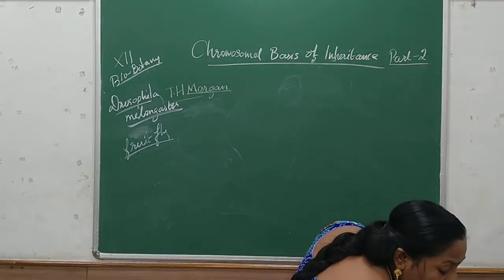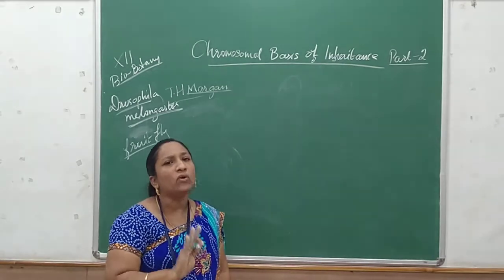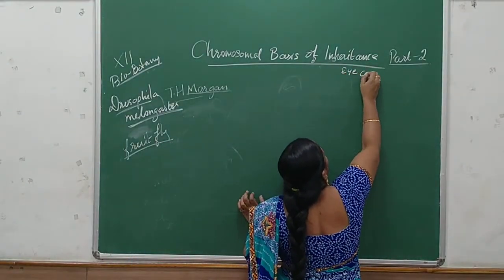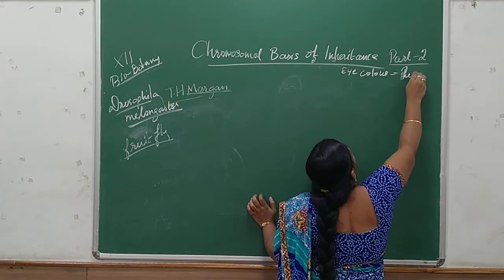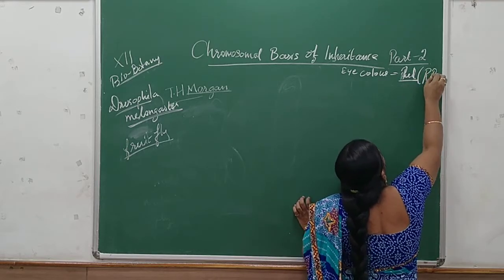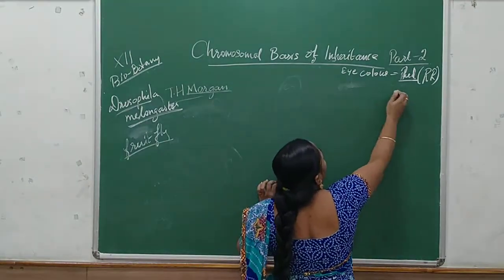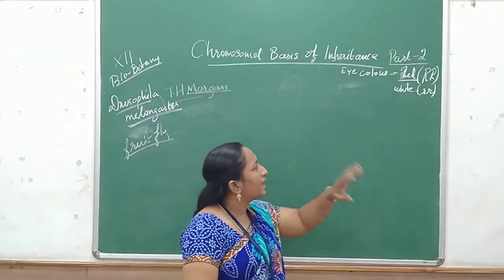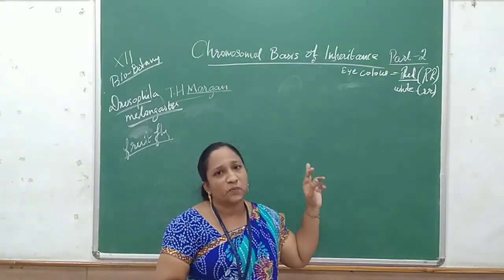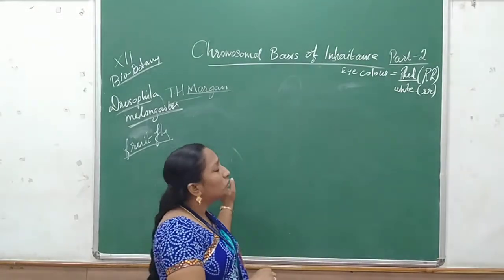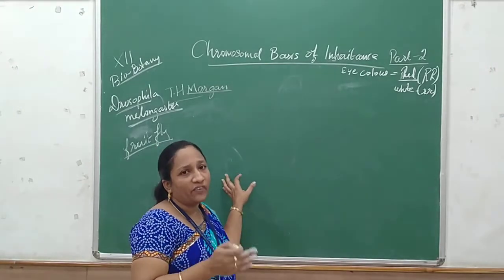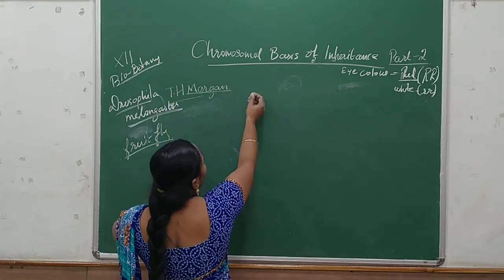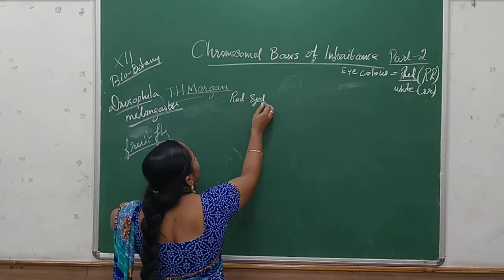He used a mutant species. Normal Drosophila will have a reddish eye color. The eye color of Drosophila is red — represented as capital R (capital R and capital R). If the eye color is white, it is represented as small r — it is a recessive character. White color is a recessive character represented as small r, and red is a dominant character expressed as capital R capital R.